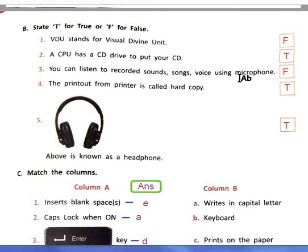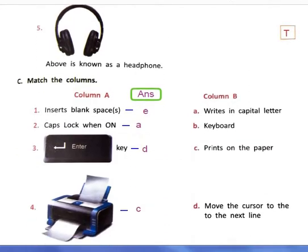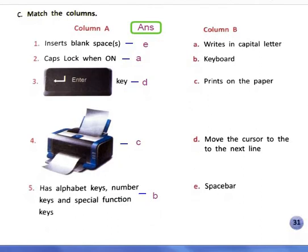False. Fourth, the printout from printer is called hardcopy - true. Fifth one, above is known as the headphone - true. Next exercise, match the columns. So two columns are given, you have to match the correct answer.